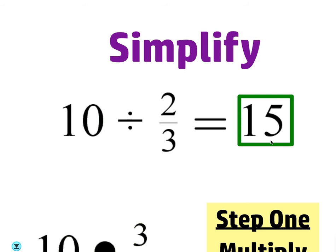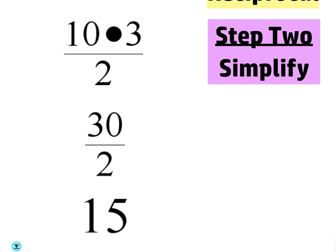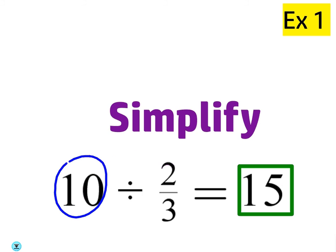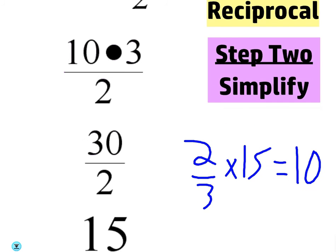So two-thirds cups times fifteen would give you ten cups. Yes. That would absolutely go down. I like to use the cup example, because it makes sense to me. I've done a little cooking in my life, not too much. But if you had two-thirds cups, and you poured that into a container fifteen times, you'd end up with the original numerator. You'd have ten cups.